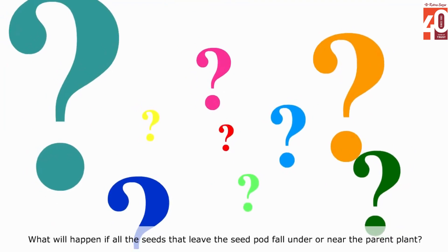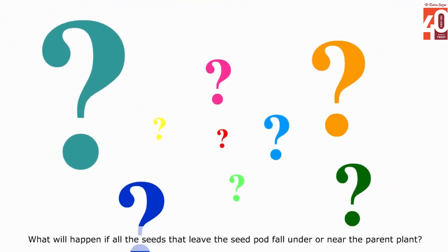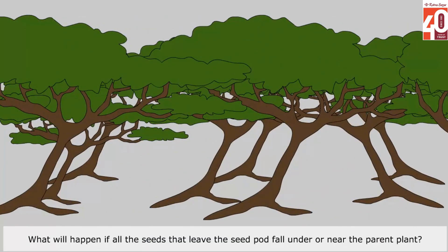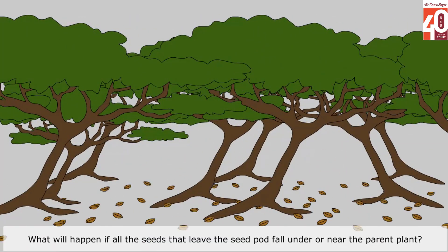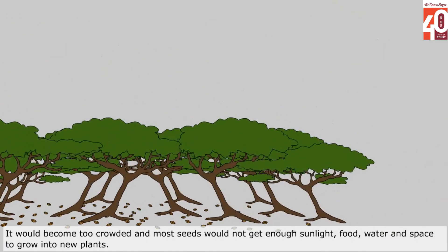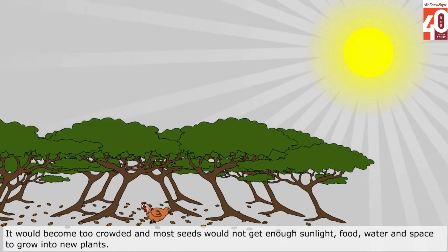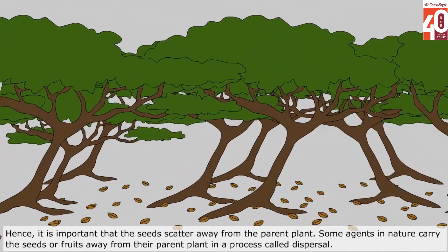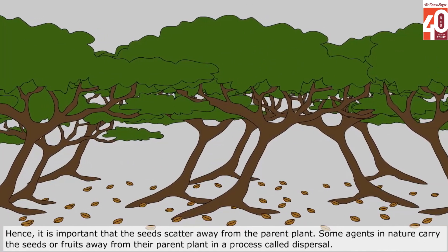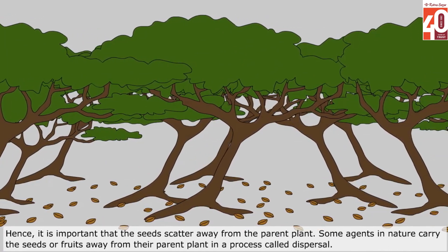What will happen if all the seeds that leave the seed pod fall under or near the parent plant? It would become too crowded and most seeds would not get enough sunlight, food, water and space to grow into new plants. Hence, it is important that the seeds scatter away from the parent plant.